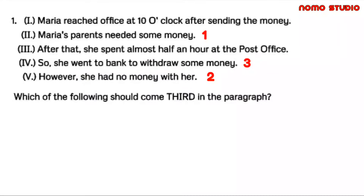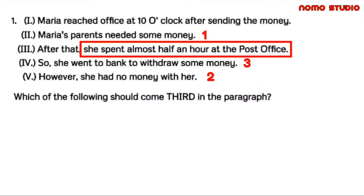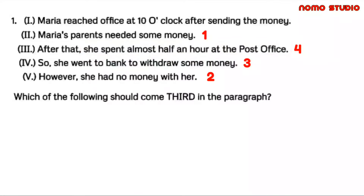After Maria got the money, what do you think she did next? Since Maria's parents needed the money, she would then send it — going to a courier service. So after she withdrew some money, she spent her time at the post office. Therefore, Roman numeral III will be our fourth sentence. Lastly, Maria went back to her office after sending the money from the post office.